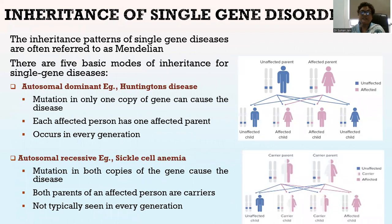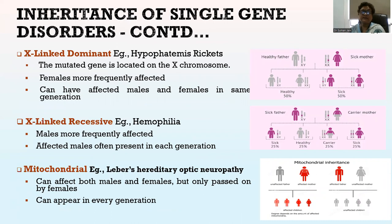The inheritance pattern of single gene diseases is often referred to as Mendelian. There are five basic modes of inheritance: autosomal dominant, as in Huntington's disease — mutations in only one copy of the gene can cause the disease, each affected person has one affected parent, and it occurs in every generation; autosomal recessive, as in sickle cell anemia — mutations in both copies cause the disease, both parents are carriers, and it is not typically seen in every generation; X-linked dominant, as in hypophosphatemic rickets — the mutated gene is on the X chromosome and females are frequently affected; X-linked recessive, as in hemophilia — males are frequently affected, with affected males often present in each generation; and mitochondrial, as in Leber's Hereditary Optic Neuropathy — can affect both males and females but only passed on by females, and can appear in every generation.